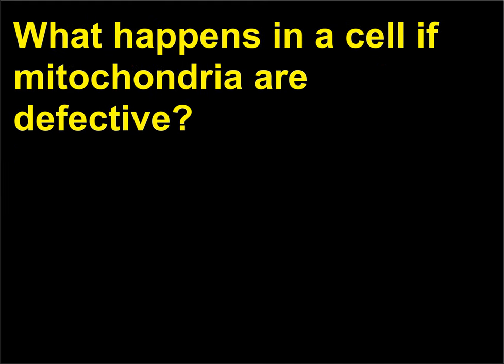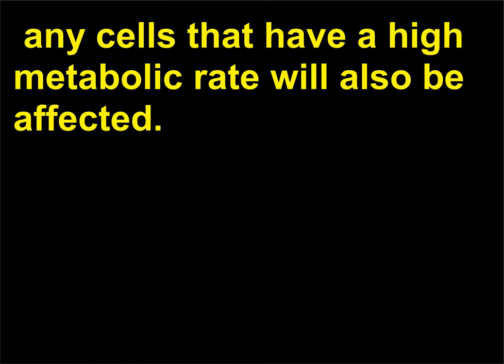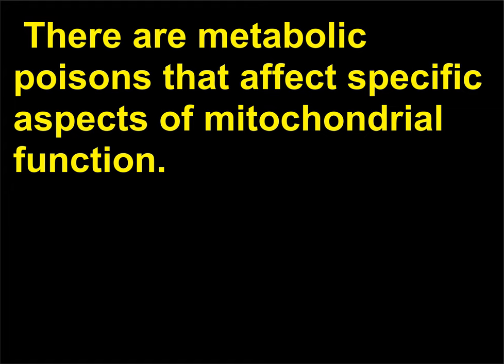What happens in a cell if mitochondria are defective? Since mitochondria are the energy producers of a cell, if a cell's mitochondria are defective, any cells that have a high metabolic rate will also be affected. There are metabolic poisons that affect specific aspects of mitochondrial function.